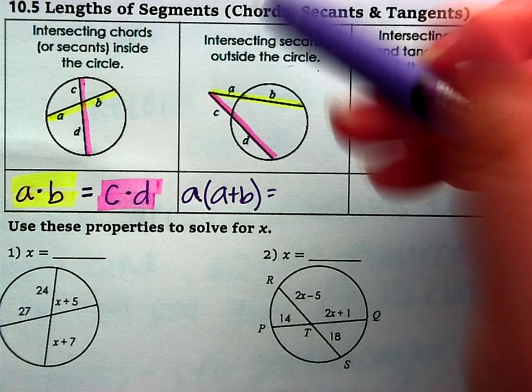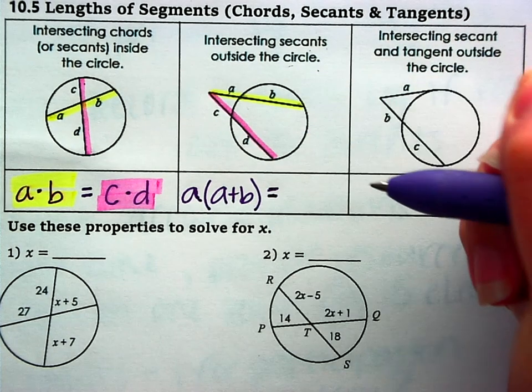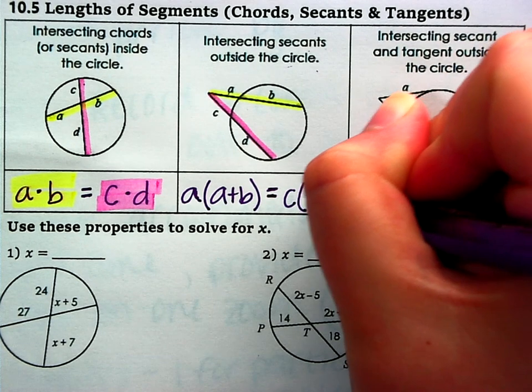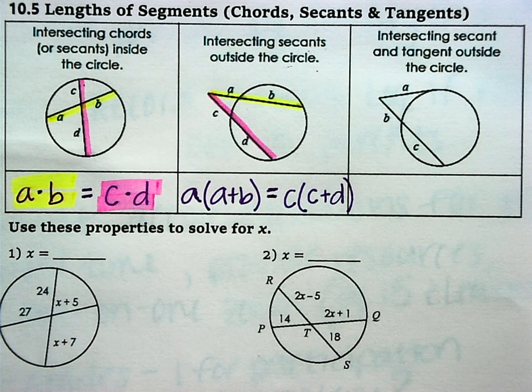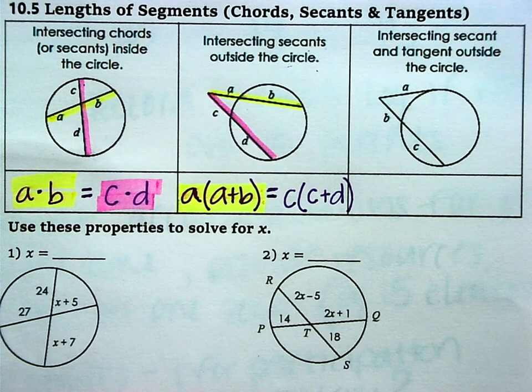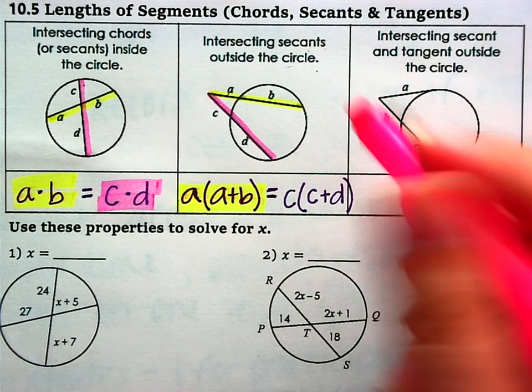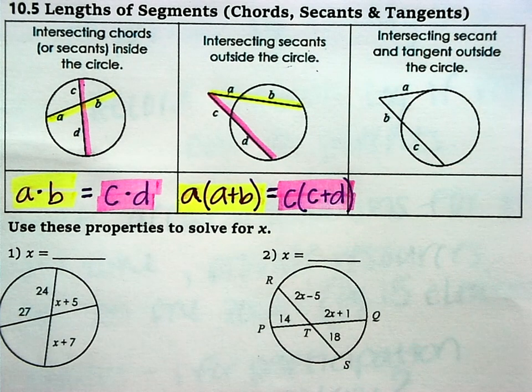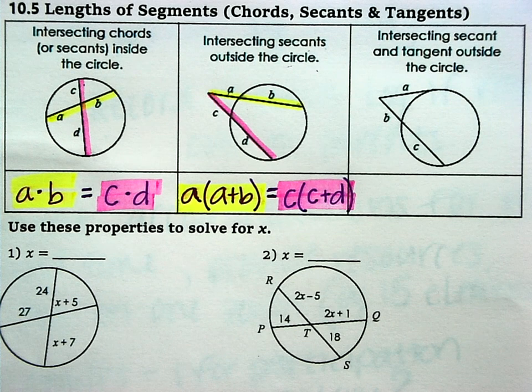Same thing for the pink one, we're going to take C. So this is equal to C times C plus D. So that would be the setup you have to follow for this scenario. We're using the parts from one secant, adding them together, multiplying by the outside piece, and equaling that to the other secant, the same setup. So that's how you'll solve number three and number four.